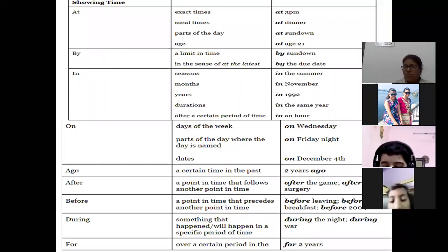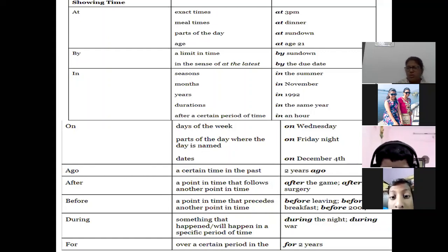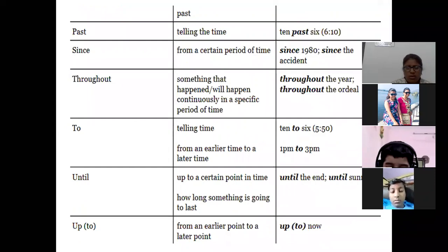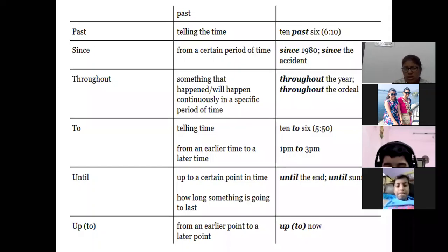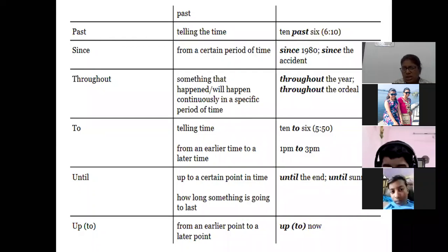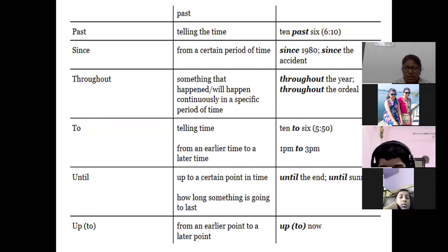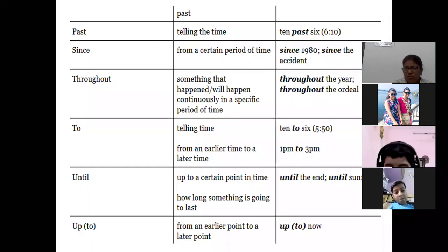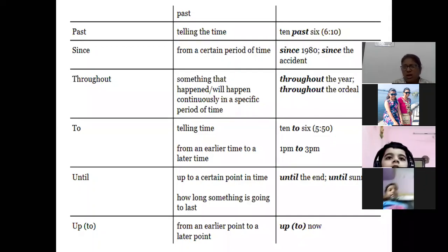'For' is used over a certain period: I have been waiting for two years. 'Past' is used in telling the time: 10 past 6. 'Since' is used from a certain period of time: since 1980, since the accident — since 1980 my grandfather has been writing poems. 'Throughout' means something happening in a specific period: throughout the year I have been trying to improve my writing.